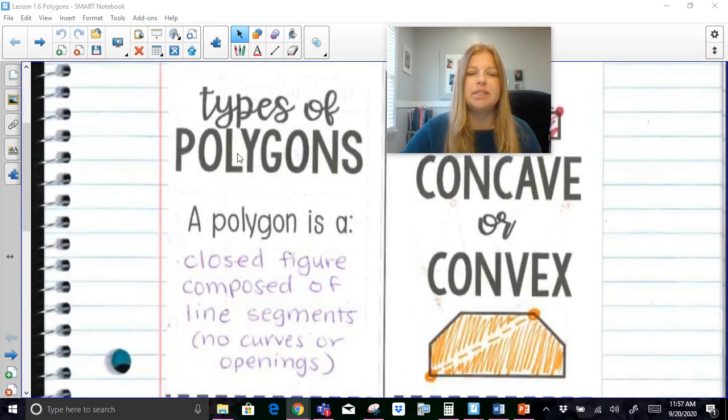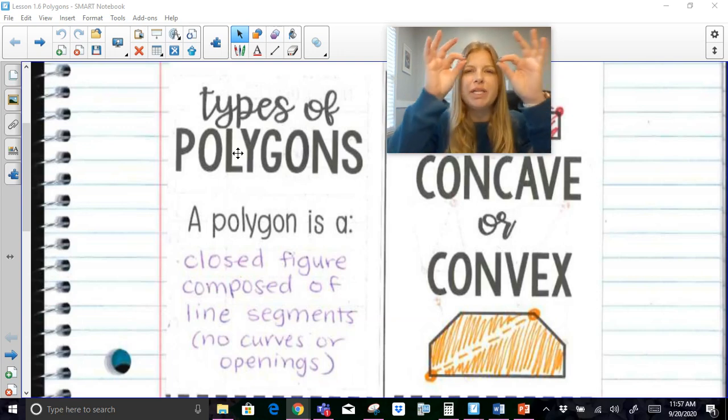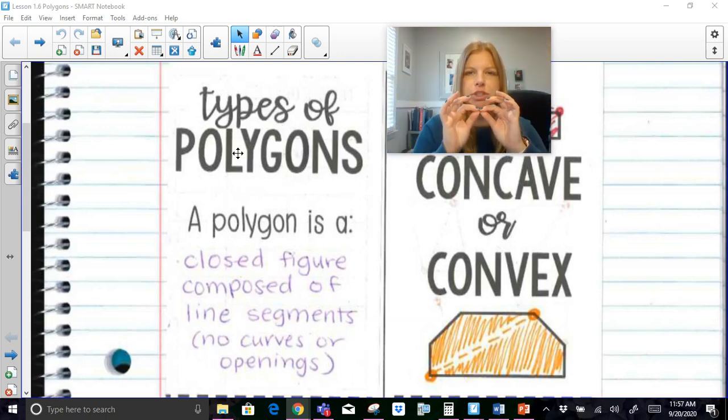First of all, we need to know that there are different types of polygons. Before we go through the different types, we're going to talk about the definition. A polygon is a closed figure, so it means you don't have any openings. All the segments are connected to each other. Think about like a gate or a fence. There's no opening. Everything is closed in of line segments. There's no curves. A polygon has no curves. So a circle is not a polygon. A crescent shape is not a polygon. A semicircle is not a polygon. It is a closed figure of just line segments, and there's no opening, no curves.